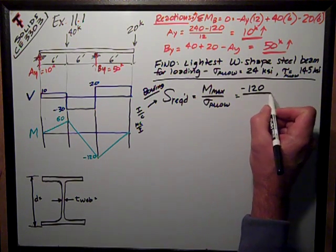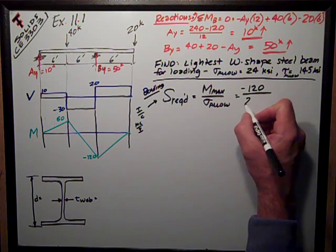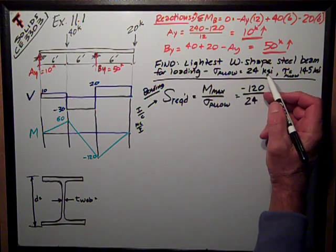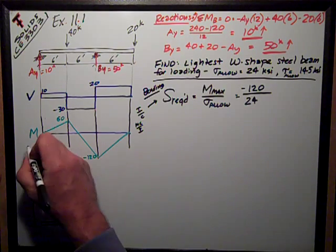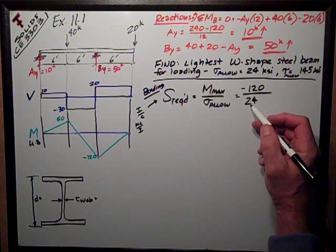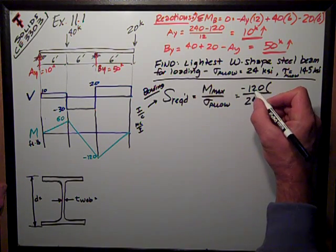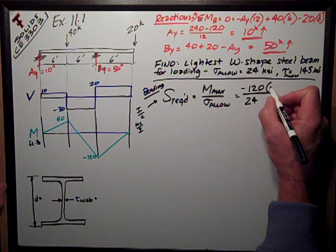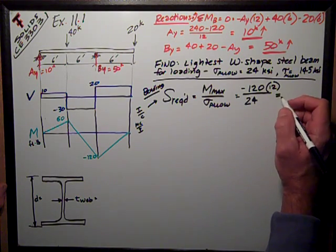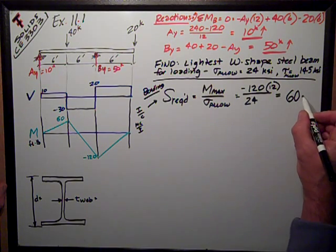So, I've got negative 120 divided by my allowable bending stress, which is 24. Note that this is in KSI, kips per square inch. This is in foot kips. I need a conversion factor, I need to convert this into inch units of moment. So, I'm going to multiply by 12.